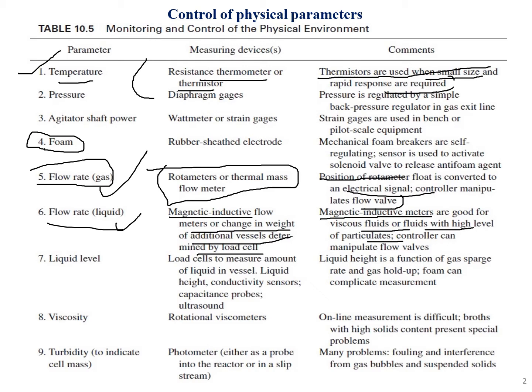The seventh point is liquid level. Load cells measure the amount of liquid, and it can also be measured with the help of probes — there are conductance probes, capacitance probes, or ultrasound probes. Liquid height is a function of gas sparge rate and gas hold-up. Foam can also complicate measurement by giving a false reading.